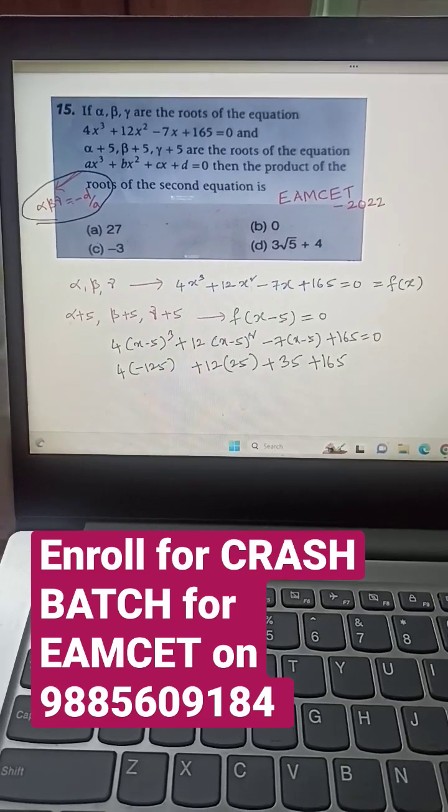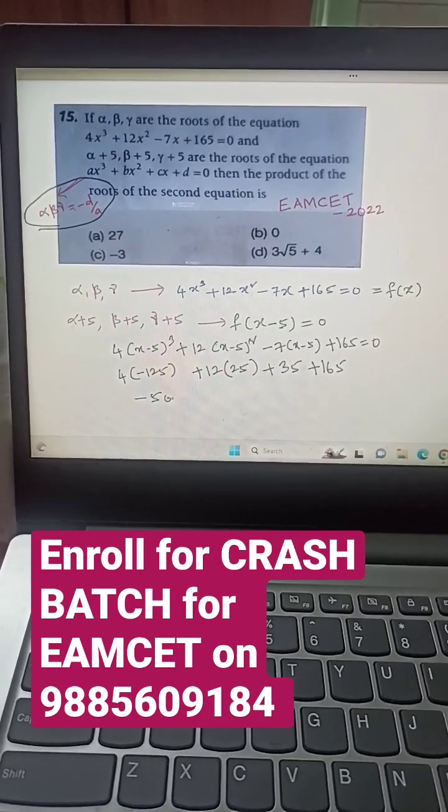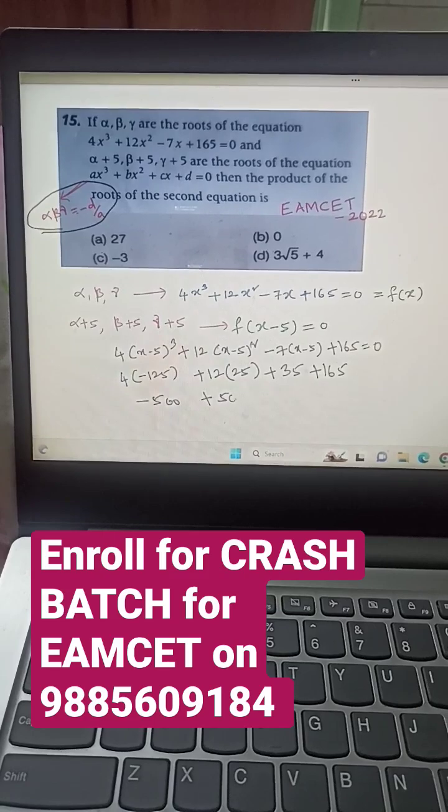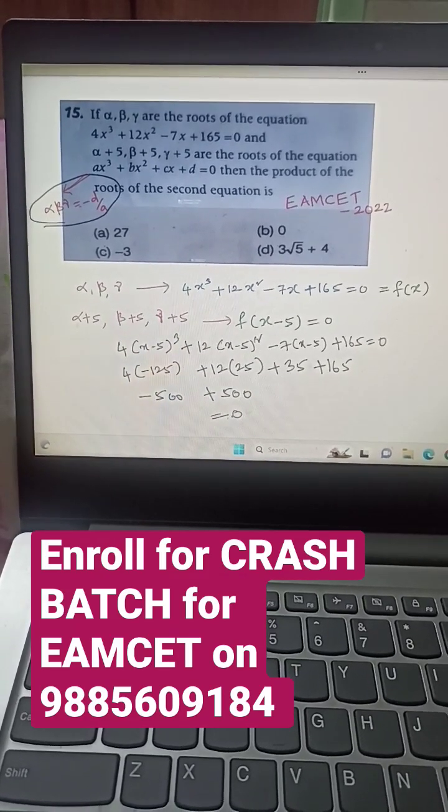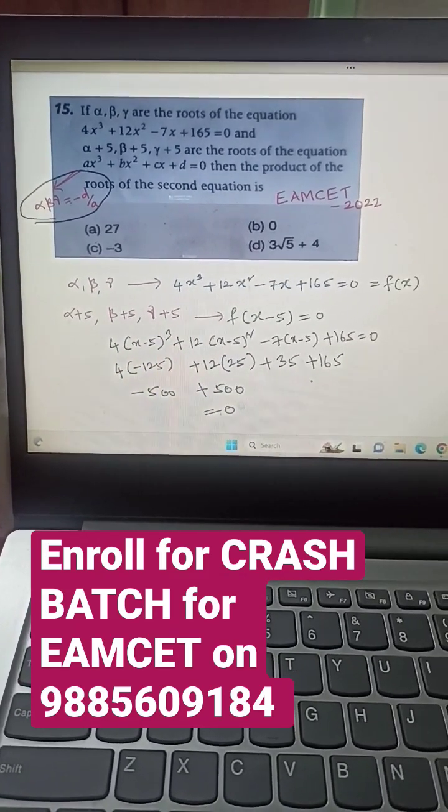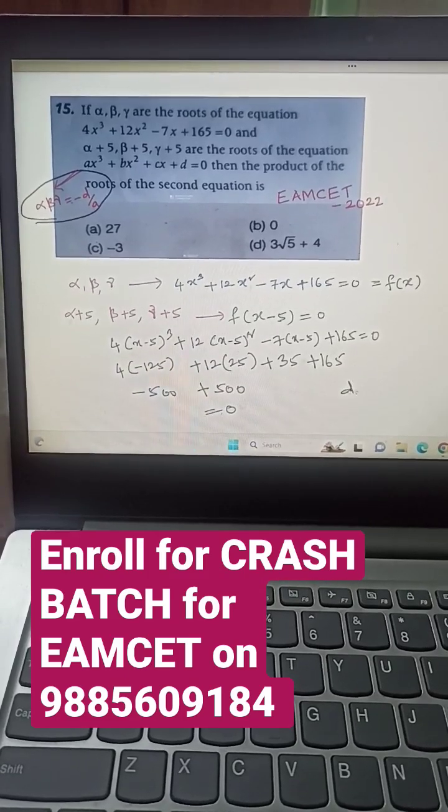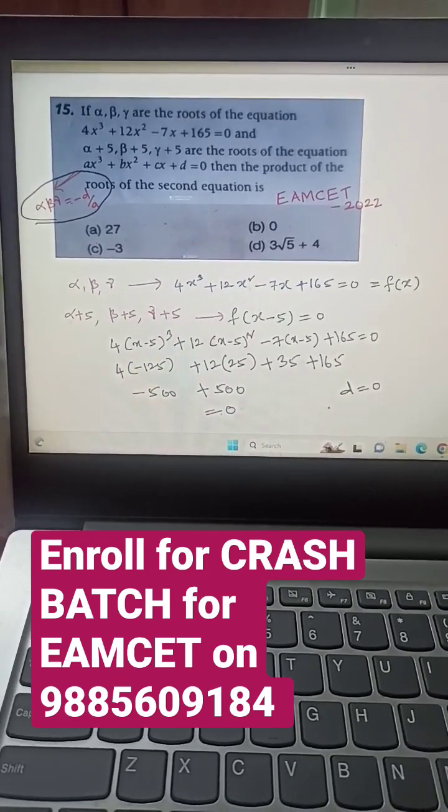That means the constant is becoming zero, so d is zero. Then the product of zeros of the given equation would be zero.